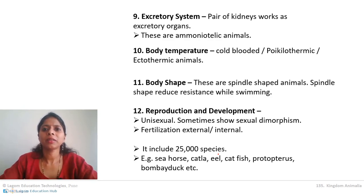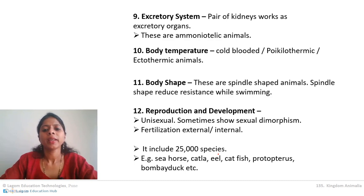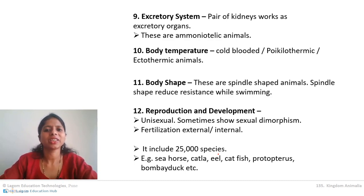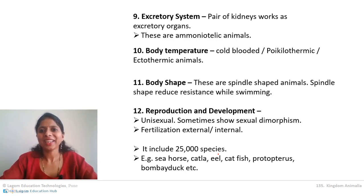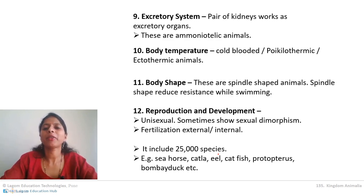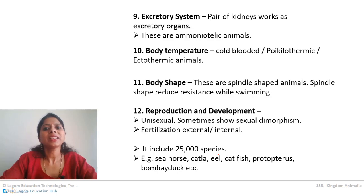There are around 25,000 or more known species of bony fish. Examples include sea horse, catla, eel, catfish, and many others. In the next video we will study Tetrapoda. Try to remember all the characteristics of bony fish, especially their fins.